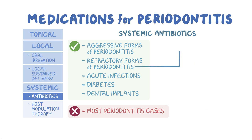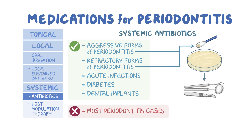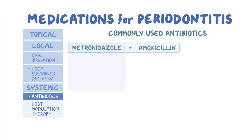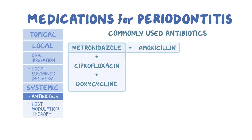To treat aggressive and refractory forms of periodontal disease, first take a culture from the most active sites for attachment loss and determine which antibiotics or combination of antibiotics will be most effective. Next, mechanical therapy will be used to disrupt the biofilm and then antibiotic therapy will begin. Commonly used antibiotics include combinations of metronidazole and amoxicillin or metronidazole and ciprofloxacin. Metronidazole, ciprofloxacin, and doxycycline have also been used as a single antibiotic.